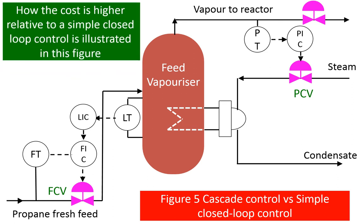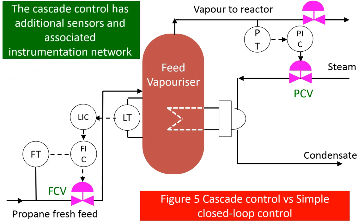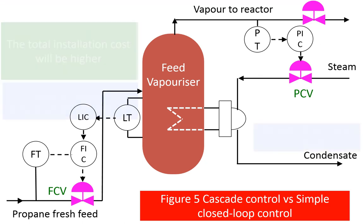How the cost is higher relative to a simple closed loop control is illustrated in this figure. The vaporizer pressure control is a simple closed loop control, while the level control is a cascade control. The cascade control has additional sensors and associated instrumentation network, hence the total installation cost will be higher.